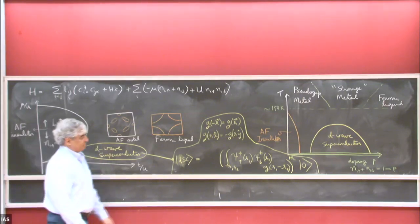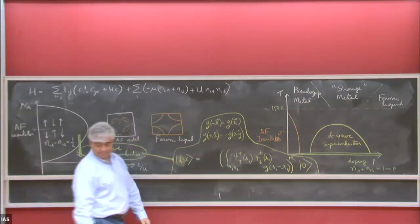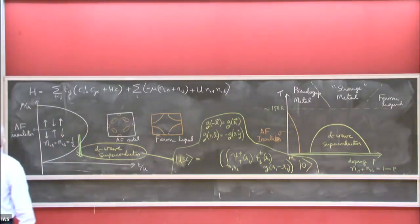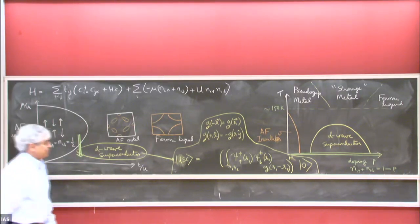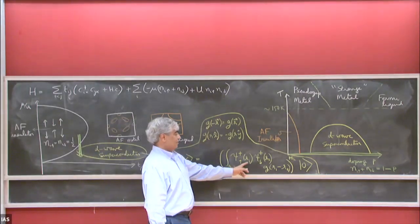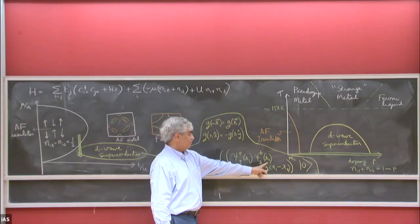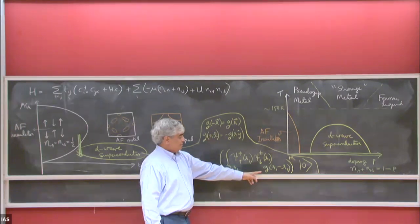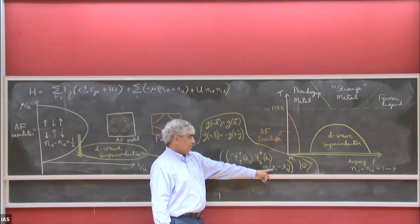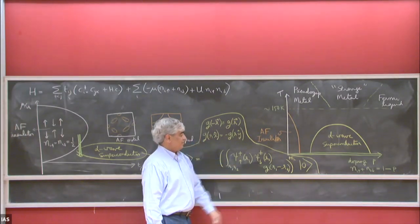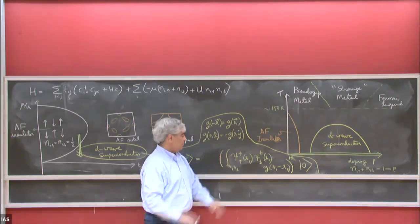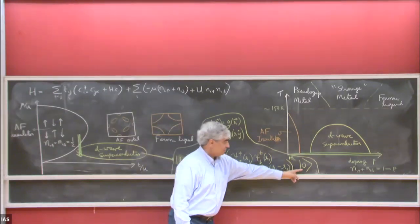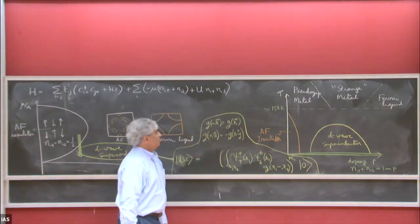Here's the wave function of the D-wave superconductor — some mean-field BCS-like wave function. You create an up-spin particle at point R1 and a down-spin particle at point R2, multiply by the Cooper pair wave function, which depends on the difference of the coordinates with no dependence on the average coordinate, and take n/2 such pairs acting on the empty state.